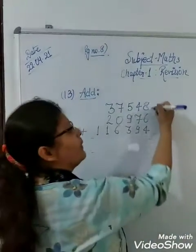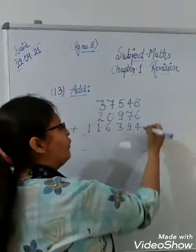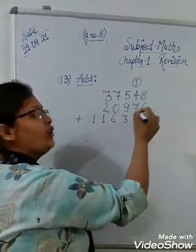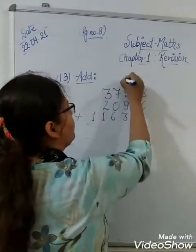Start adding from the first place. 8 and 6 is 14, 8 and 4 is 18, 8 and 4 is 12, 12 and 9 is 21. Write 1, carry 2 must be carried.